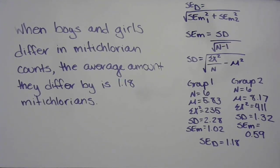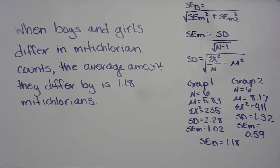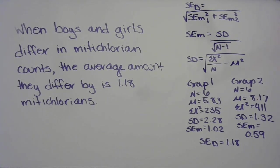The calculated standard error of the difference was 1.18. Using the information from the initial word problem, we can put our findings into sentence form: when boys and girls differ in midichlorian counts, the average amount that they differ is by 1.18 midichlorians. If you're not sure what a midichlorian is, you should Google it. You've just completed standard error of the difference — congratulations, good job!